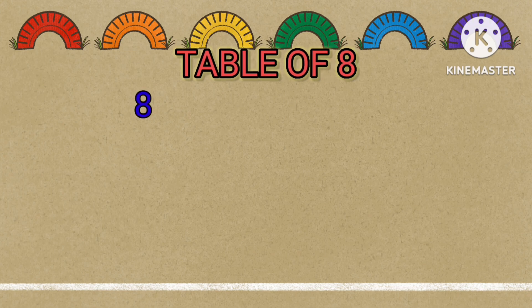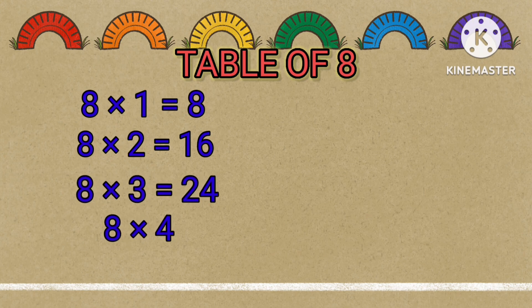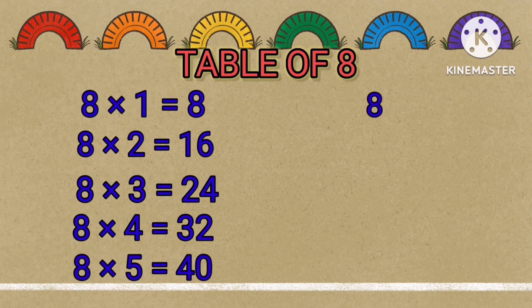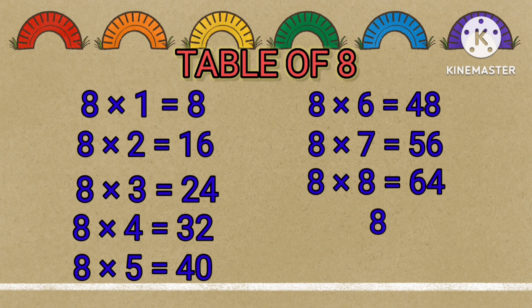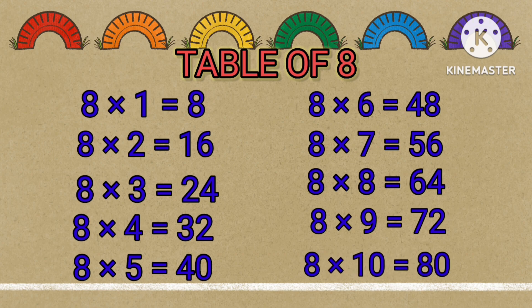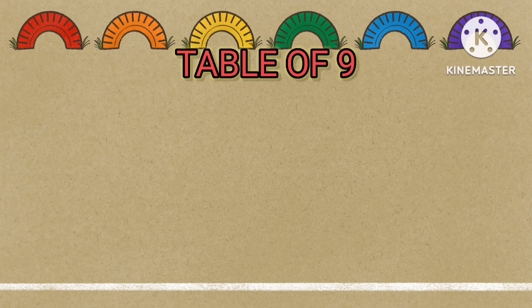Table of 8: 8 times 1 equals 8, 8 times 2 equals 16, 8 times 3 equals 24, 8 times 4 equals 32, 8 times 5 equals 40, 8 times 6 equals 48, 8 times 7 equals 56, 8 times 8 equals 64, 8 times 9 equals 72, 8 times 10 equals 80.